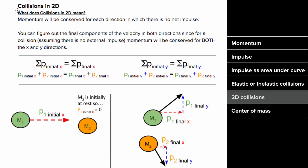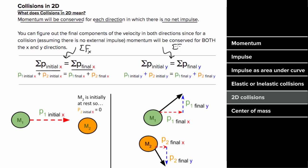How do you deal with collisions in two dimensions? Well, the momentum will be conserved for each direction in which there's no net impulse. If there's no net impulse in both directions, then the momentum in both directions will be conserved independently. In other words, if there's no net force in the x-direction, the total x-momentum has to be constant. And if there's no net force in the y-direction, the total momentum in the y-direction has to be constant.